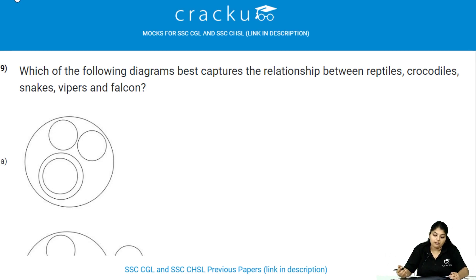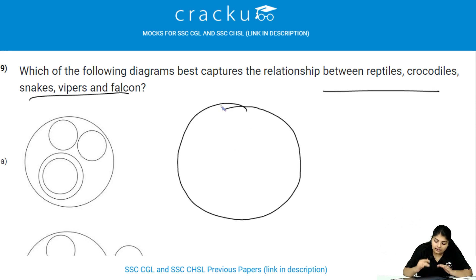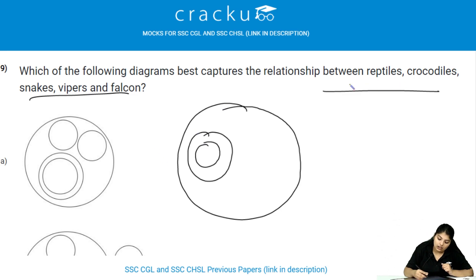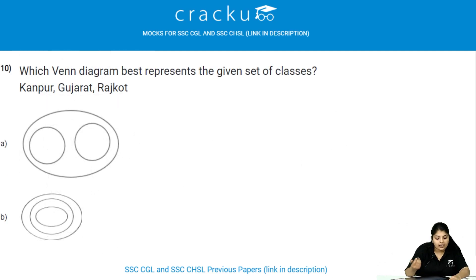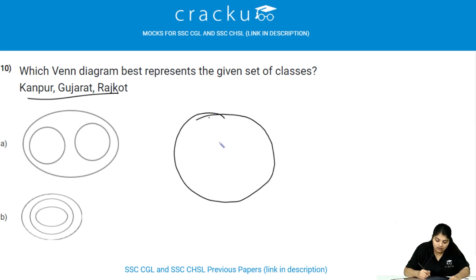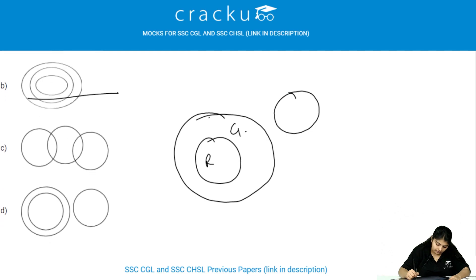Which of the following diagrams best captures the relationship between reptiles, crocodiles, snakes, vipers, and falcons? Vipers are a type of snake, and snakes and crocodiles are both reptiles. Falcon is a bird — completely separate. So the diagram shows reptiles as the outer circle containing snakes, which contains vipers, and crocodiles as another subset of reptiles, with falcon as a separate circle outside. The answer is option C. For the next Venn diagram question: Rajkot is in Gujarat, so Rajkot is inside Gujarat, and Kanpur is totally separate. The answer is option D.